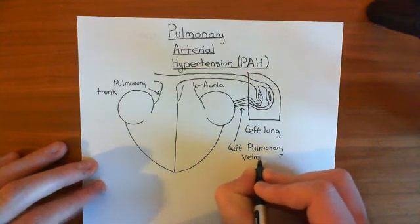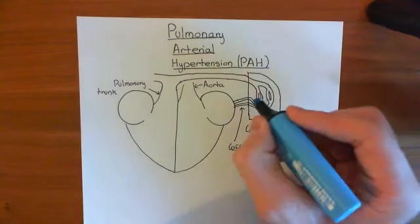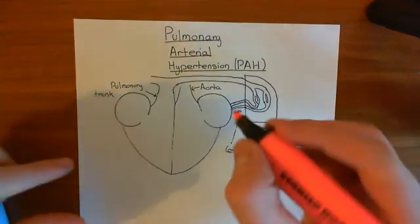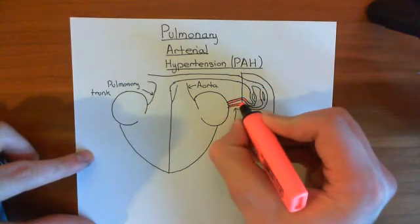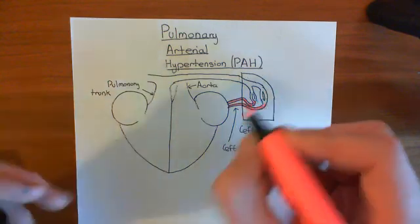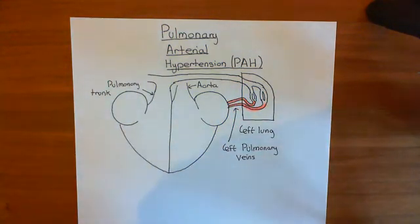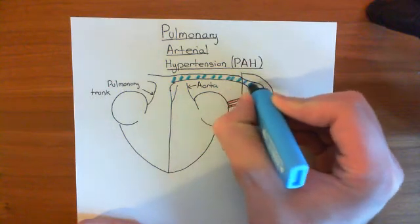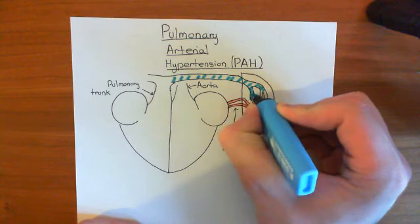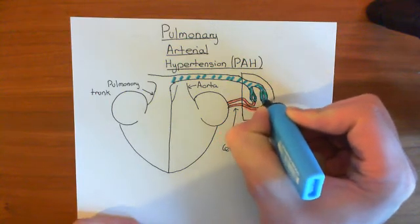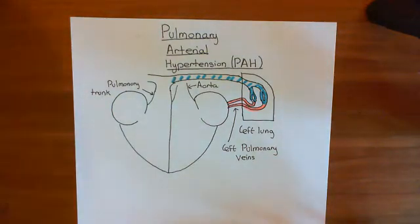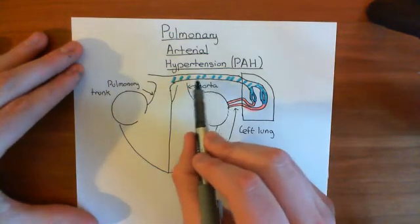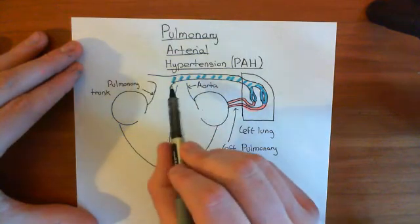Even though the pulmonary veins are veins, they are actually carrying oxygenated blood, so we colour them in red — here comes the oxygenated blood back from the lungs. The blood going to the lungs in the left pulmonary artery should be in blue, since the pulmonary artery is the only artery carrying deoxygenated blood. The blood becomes oxygenated when it passes through the pulmonary capillaries. So pulmonary arterial hypertension means that the blood pressure in the pulmonary arteries is too high.